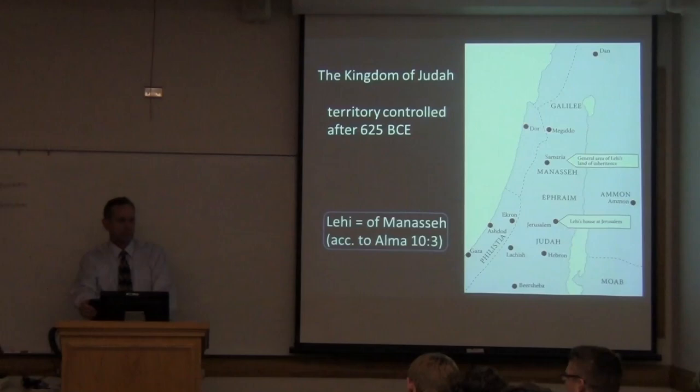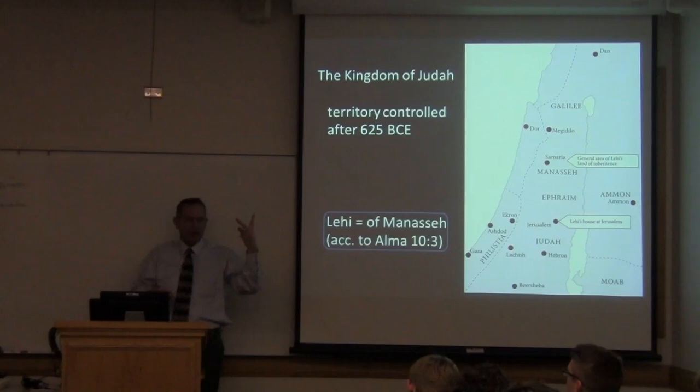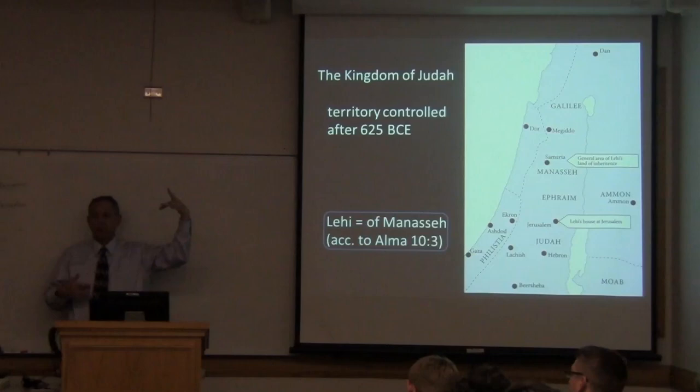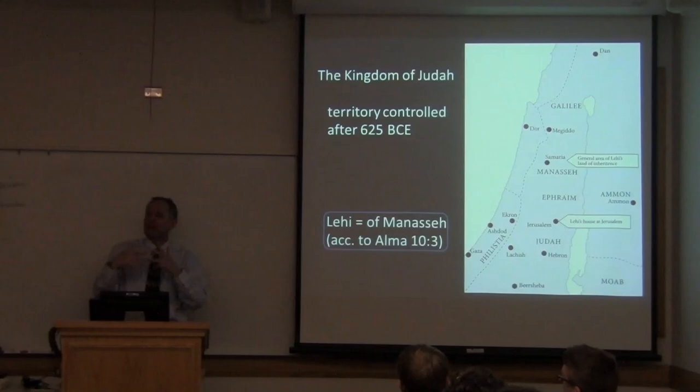Where does Lehi cast himself on his bed? In Jerusalem. In 1 Nephi 1, it says he goes from where he was praying back into his house at Jerusalem and casts himself down on his bed. That's the second revelation he receives in 1 Nephi 1. The first one was the pillar of fire that dwelt on a rock, which last week I suggested was probably on the Mount of Olives, outside the wall of Jerusalem. Then he goes back and needs to take a nap — that was a tiring experience — and he has another vision inside his house. I call it Lehi's Big Day.